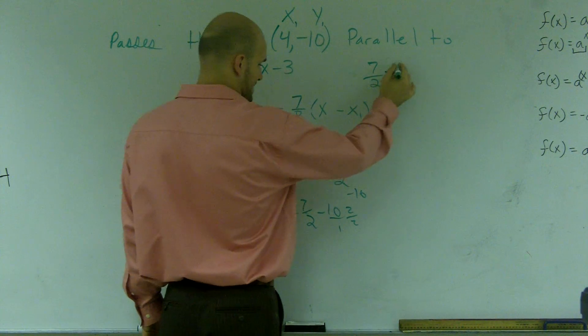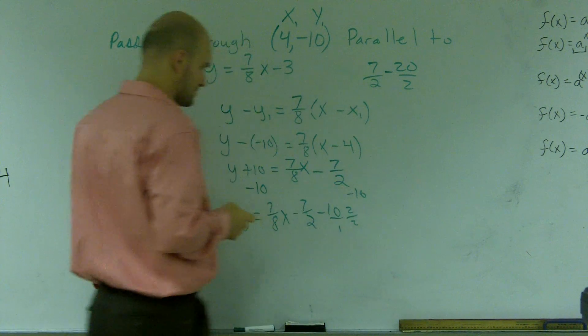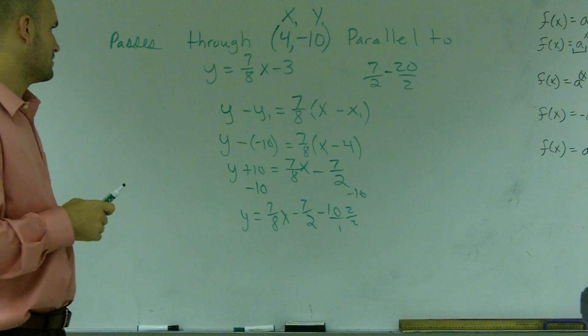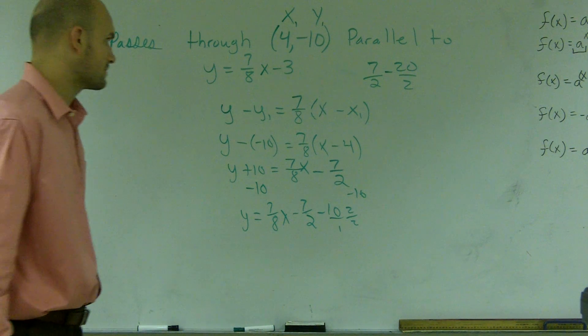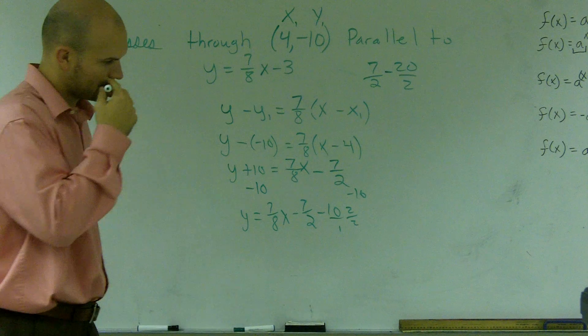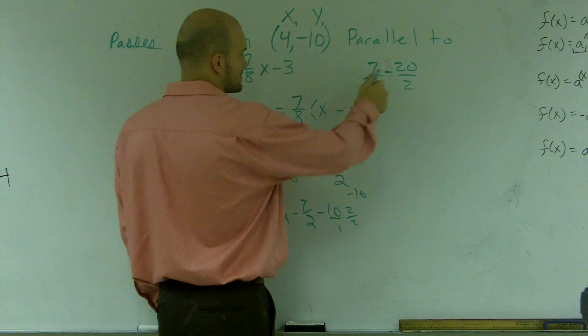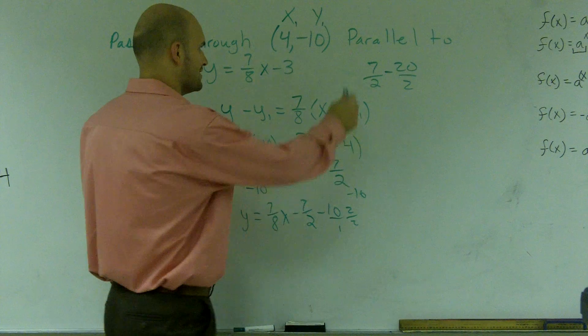So I have -7/2 minus 20/2. That's going to give me a negative.